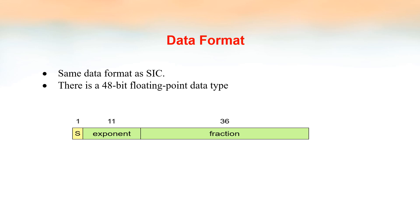SIC XE has the same data format as SIC, which means a 24-bit format for integers. Negative numbers are represented by 2's complement form, and characters are represented by 8-bit ASCII code. In addition, it has a 48-bit floating point data type. The first bit is the sign bit, the next 11 bits are the exponent, and the remaining 36 bits represent the fraction.